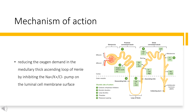Mechanism of action: Torsemide is a loop diuretic that acts by reducing oxygen demand in the medullary thick ascending loop of Henle by inhibiting the Na+/K+/Cl- pump on the luminal cell membrane surface. This is achieved by torsemide binding to a chloride ion binding site of the transport molecule. Torsemide also affects the renin-angiotensin-aldosterone system by inhibiting the downstream cascade after angiotensin II activation, reducing the expression of aldosterone synthase, TGF-B1, thromboxane A2, and aldosterone receptor binding.